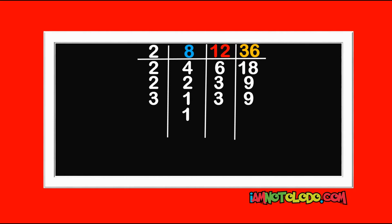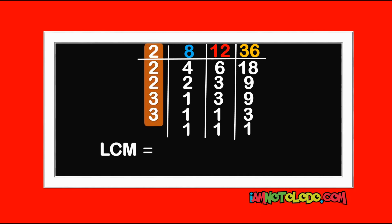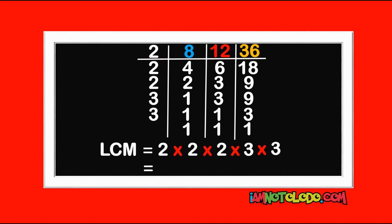This is already 1. 3 in 3 is 1, 3 in 3 is 1, 3 in 9 is 3. We still have 3, so we can still use 3. This is already 1. 3 in 3 is 1. So our LCM equals 2 times 2 times 2 times 2 times 3 times 3 times 3. When you multiply these it will give us 72. Did you get it right? Good.